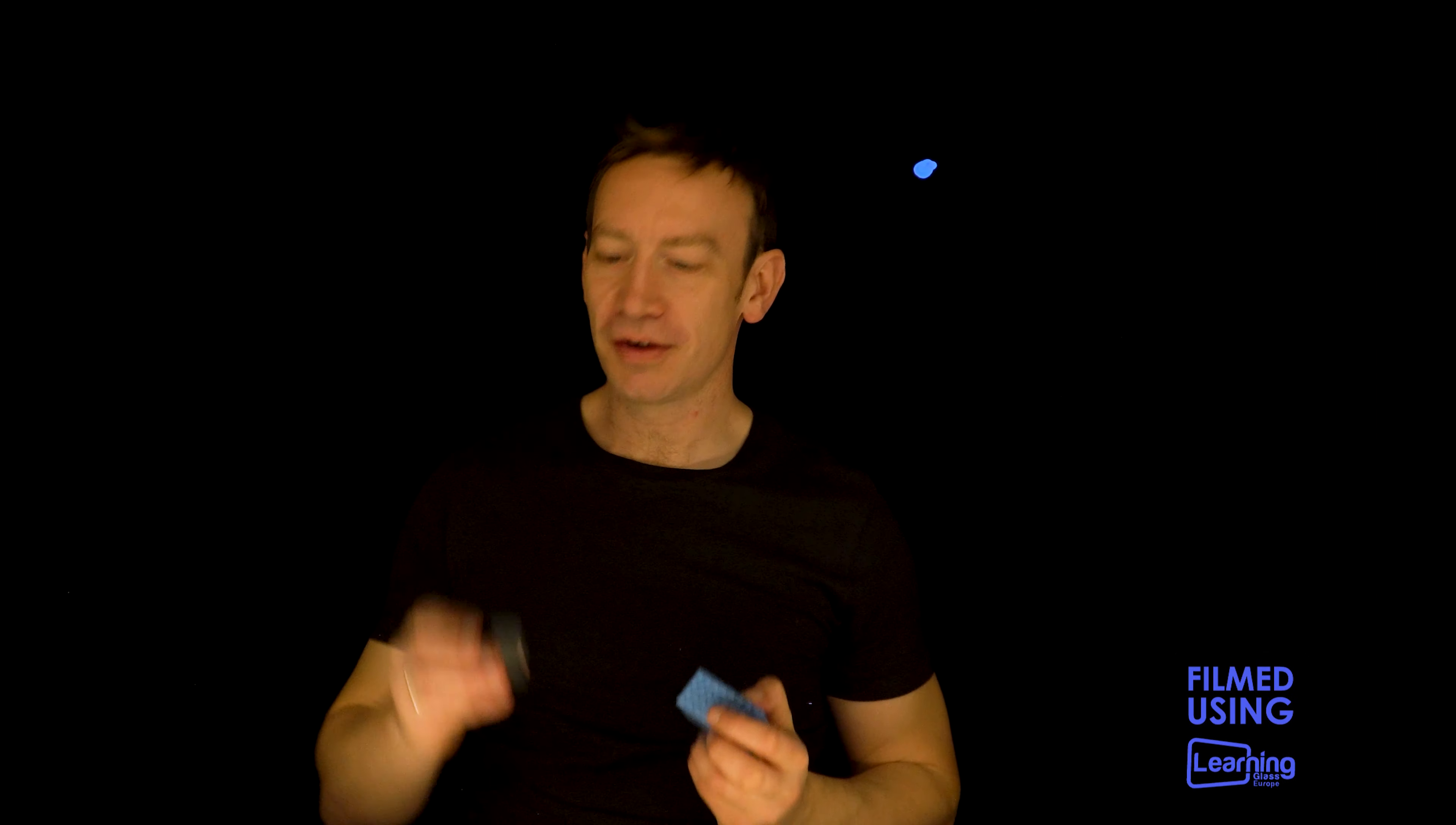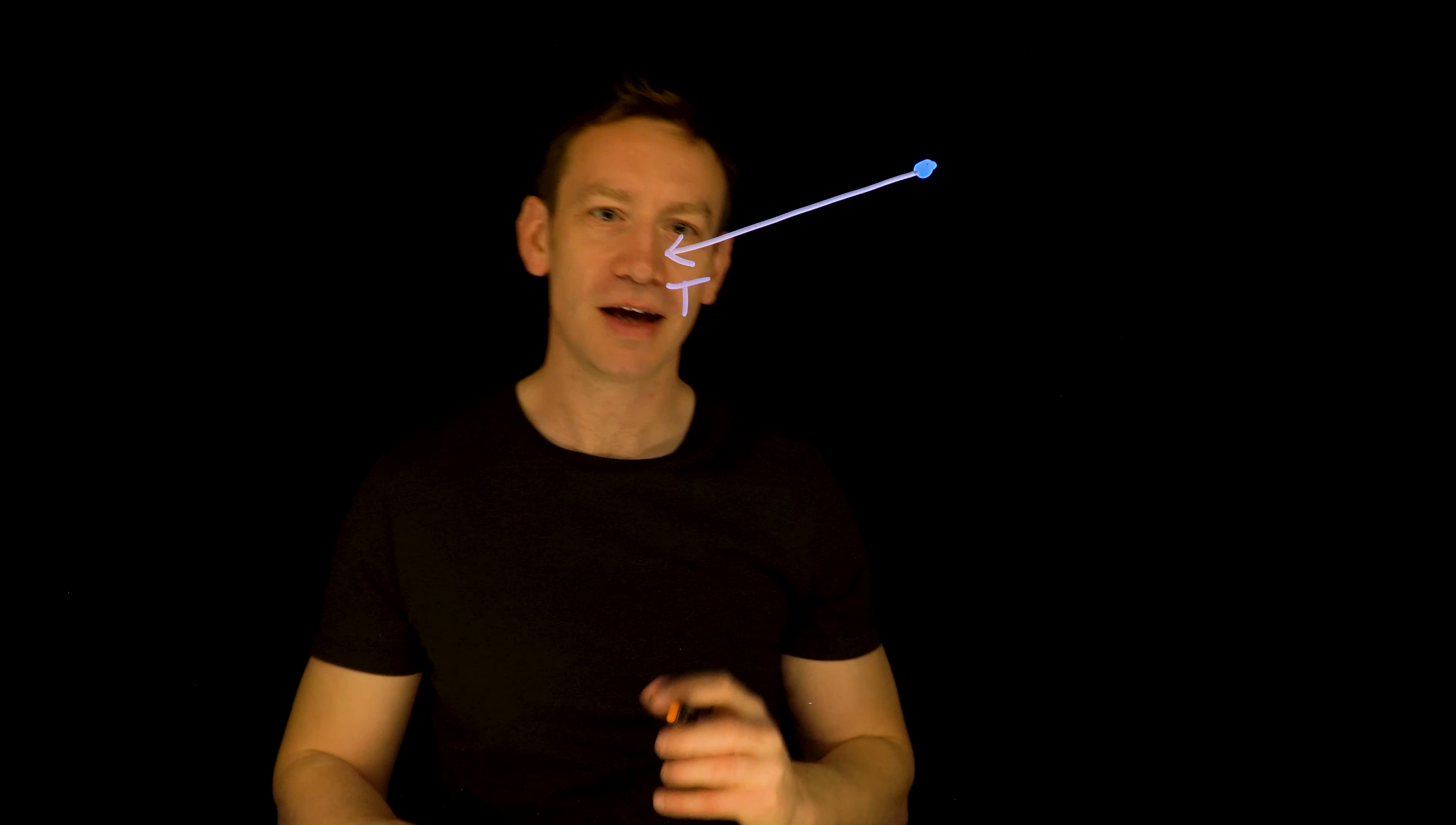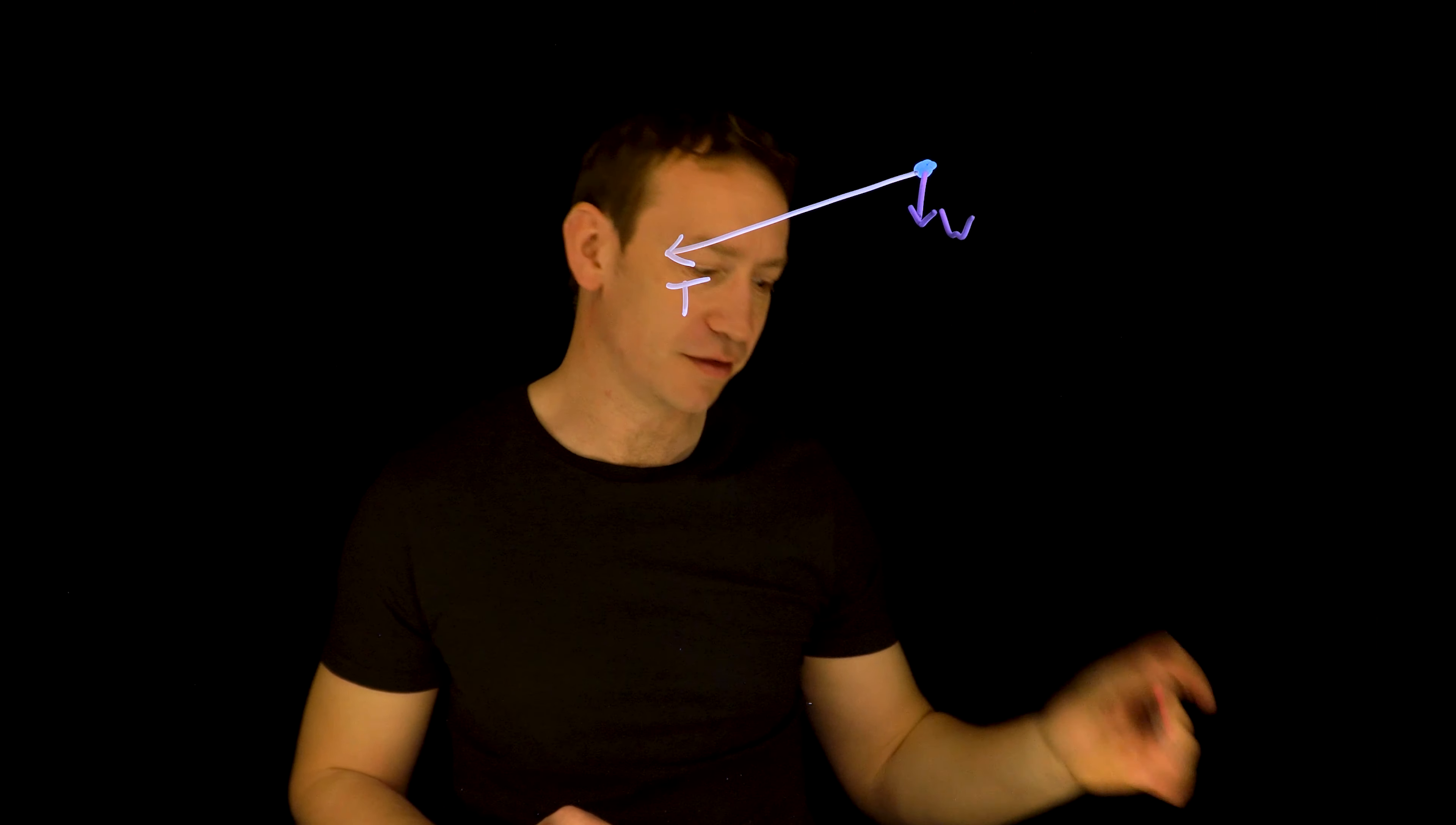So that blue dot is going to be representing the block on the table. Now in terms of forces, because we've got a weight hanging over the edge, that's going to cause a tension in the thread which is going to cause it initially to accelerate. So if I just put in my tension force, something like that, I'm going to call that T to represent the tension. Other forces, we've got the weight of the block acting down, so that's W.